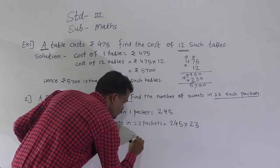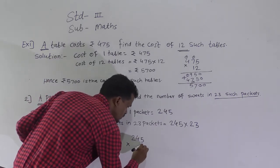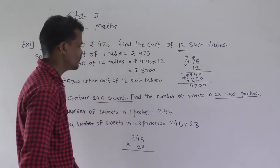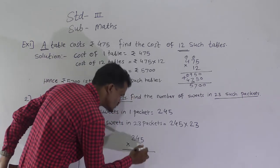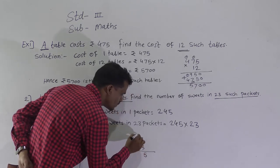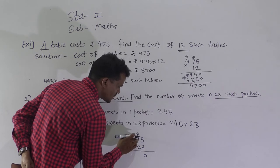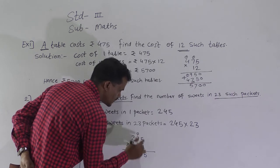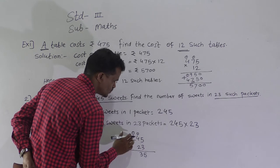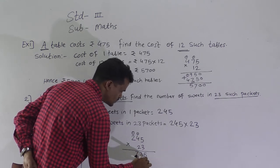Solve 245 multiplied by 23. First partial product: 3 fives are 15, write 5, carry 1. 3 fours are 12 plus 1 is 13, write 3, carry 1. 3 twos are 6 plus 1 is 7. Write 0 for the second row.